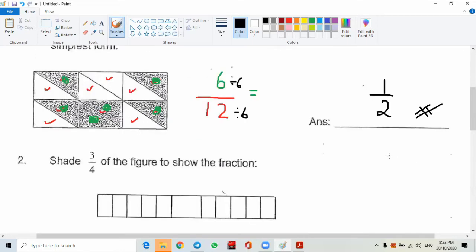Shade 3 quarters of the figure. Oh, this one got something wrong, no line in. So, three quarters. How many boxes are there? 1, 2, 3, 4, 5, 6, 7, 8, 9, 10, 11, 12.